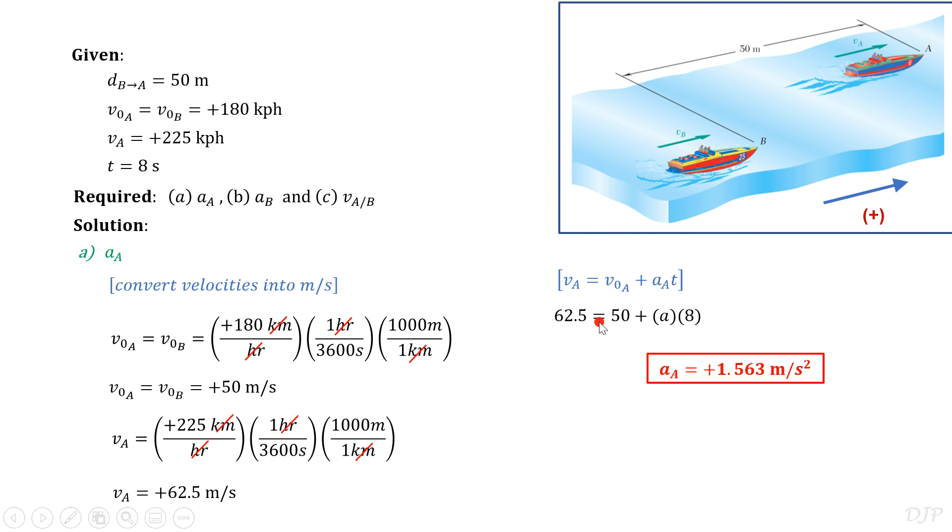Next, let us solve for acceleration of boat B. Let's recall these given values and the obtained acceleration of boat A. If you analyze this question with the given values, you may notice that what we have now are not yet enough or not yet sufficient to solve for a sub B. When that happens, you may resort to relating the two motions, motion of boat A and of boat B.